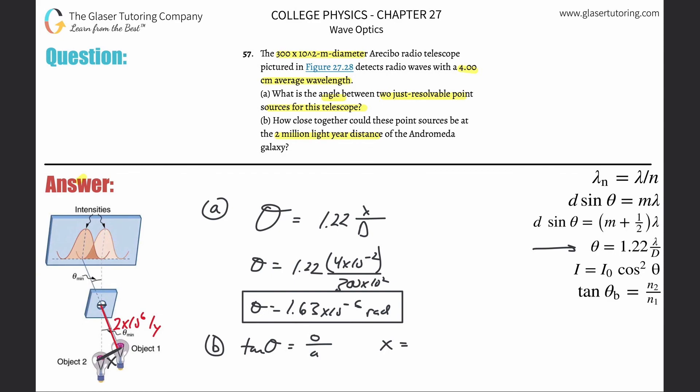Just simply cross-multiply. The opposite side, which is X in the problem, is going to be equal to the tangent of the angle multiplied by that adjacent length of 2 times 10 to the 6th. So let's plug that in: 2 times 10 to the 6th light-years. Your answer is going to be in light-years, by the way.